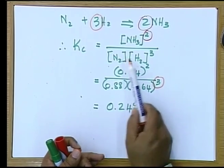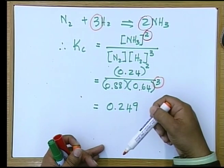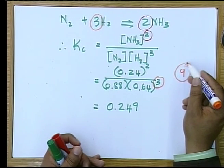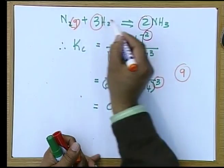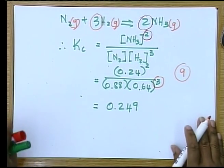We went to our Kc expression, finding that the products go on top, did our substitutions and calculation. This question was worth nine marks in total. It is important to know which equation or formula to use and how to write your Kc expression. All species featured in this expression because all were in the gas phase. Thank you for coming today; please post questions on the Moodle and ask your teachers to assist. The next physical science teacher will be with you in a few weeks. Thank you and goodbye.